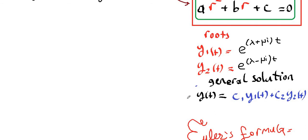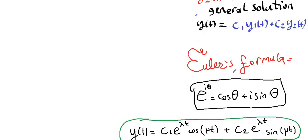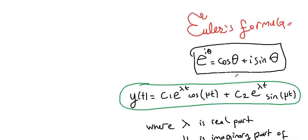Here, λ and μ are the real and imaginary parts of the roots. Utilizing Euler's formula, we can derive the general solution as c1 times e to the λt cosine(μt) plus c2 times e to the λt sine(μt), where λ is the real part and μ is the imaginary part of the solution of the characteristic equation.